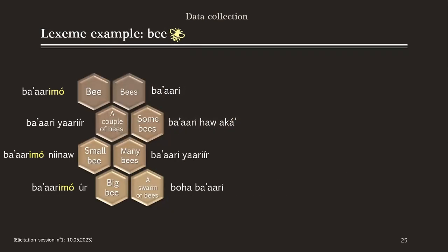Let's look at one example — one noun and all the questions I asked related to it, which is bee. Starting from the top left, I asked the word for bee — how do you say B, Bs, a couple of Bs, and so on. At the top left I got the answer BARIMO. IMO, highlighted in yellow, is the singletive marker. For Bs, I got the general or plural form BARI.